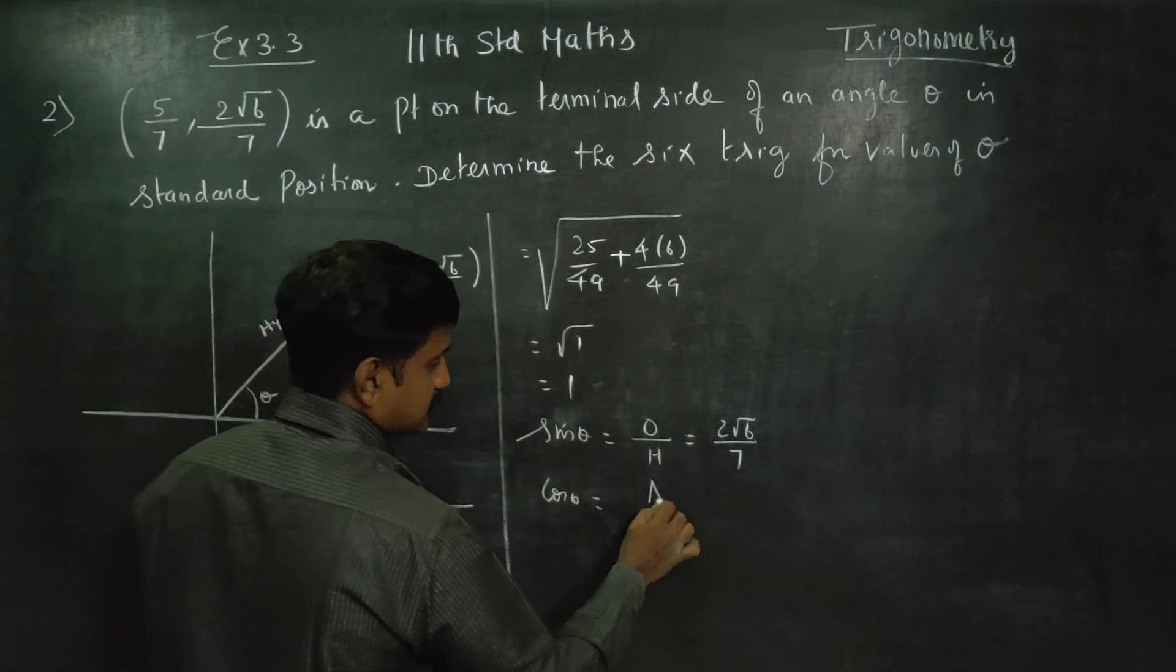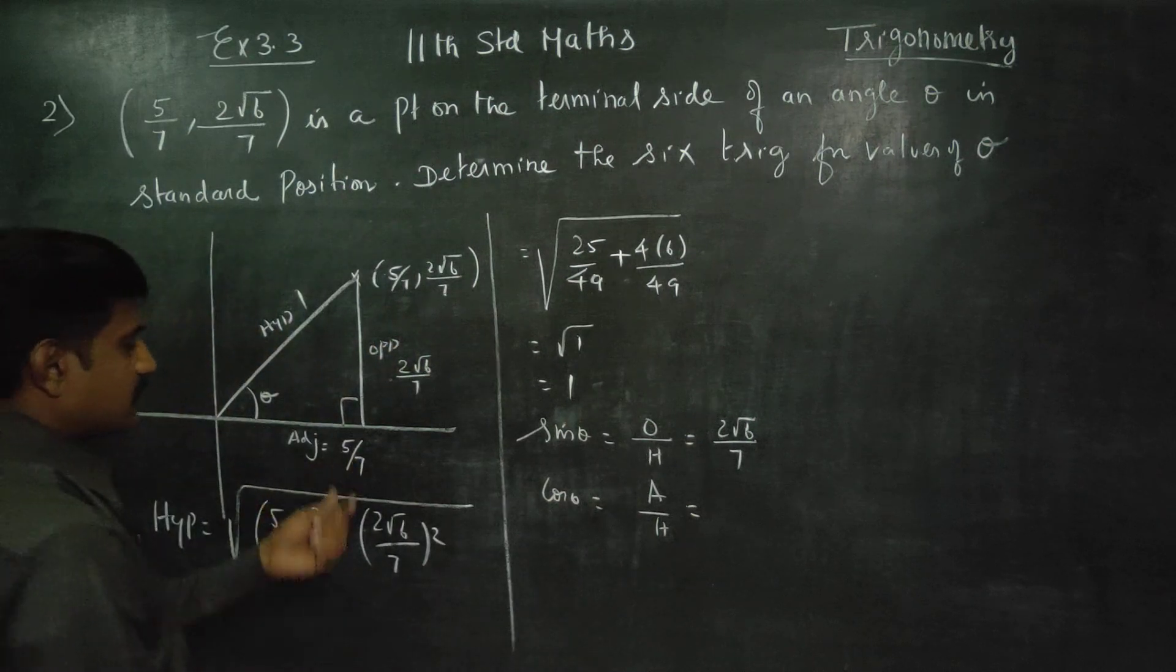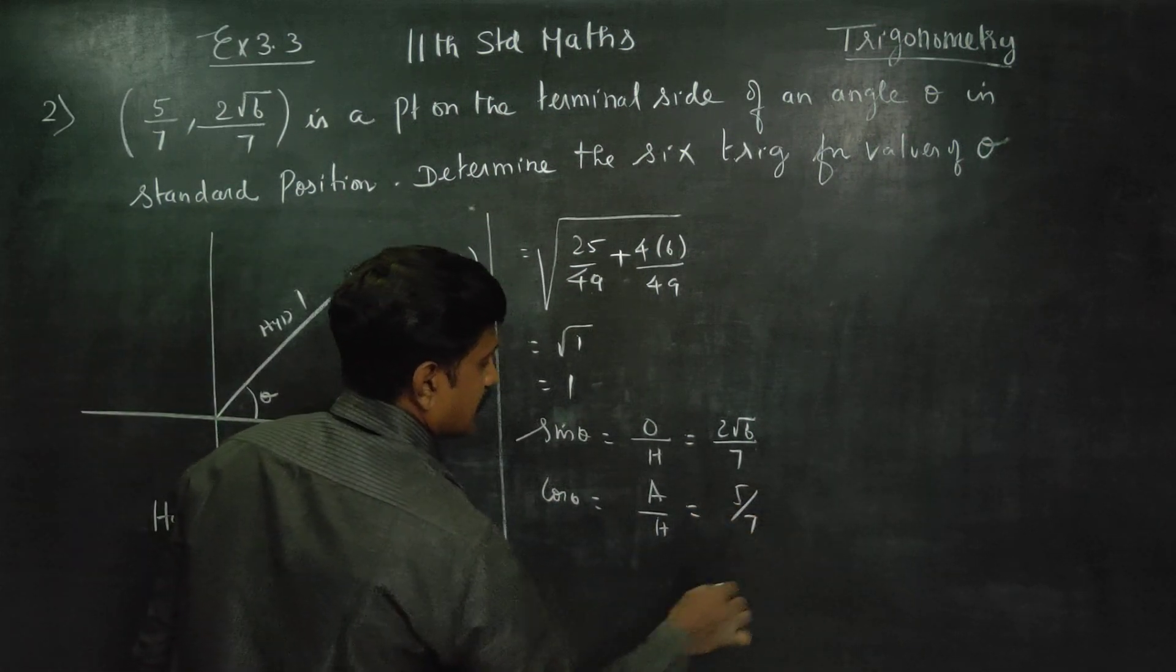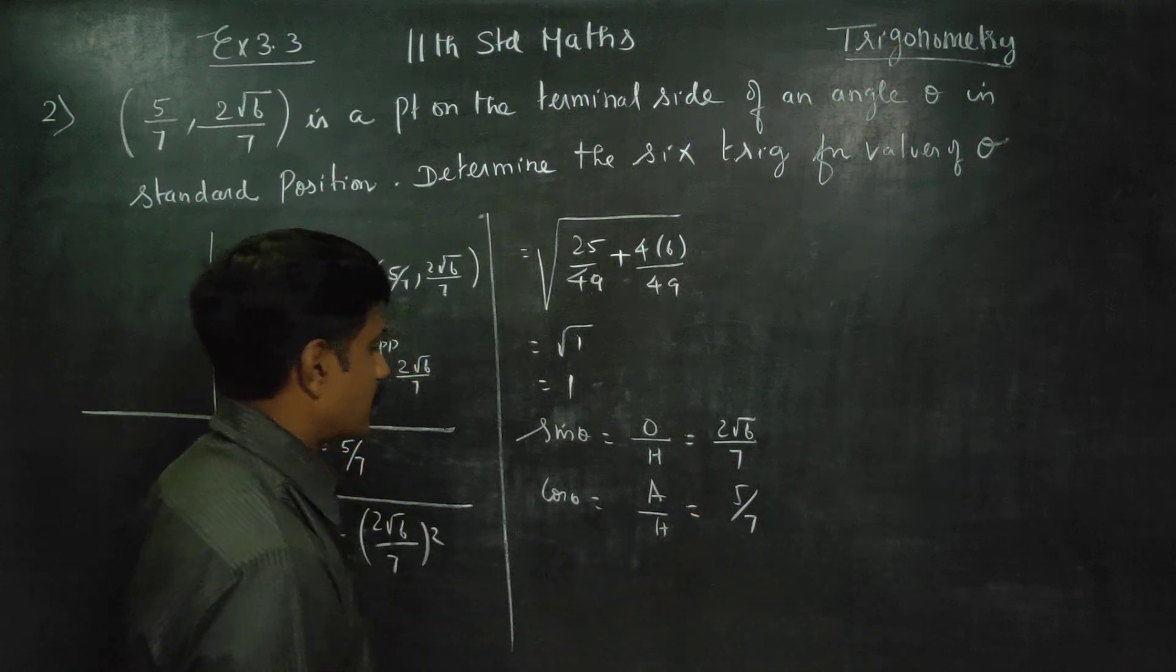Cos theta: adjacent side by hypotenuse. My adjacent is 5 by 7. Hypotenuse is 1, so cos theta is 5 by 7.